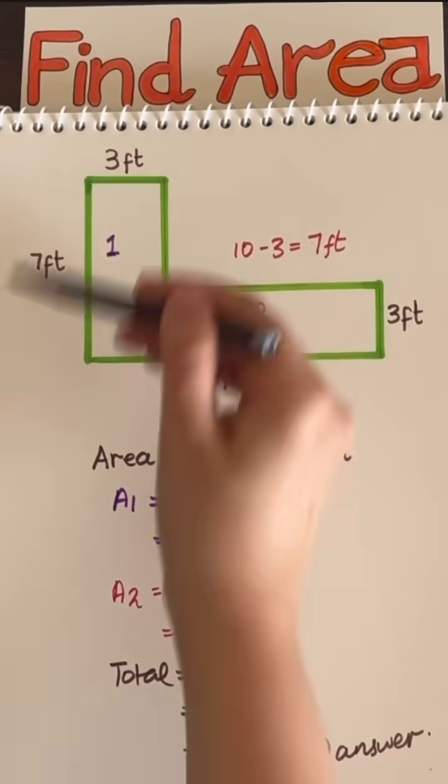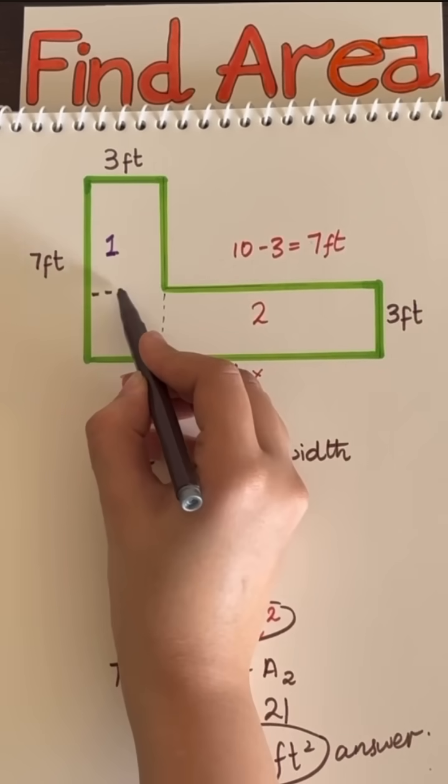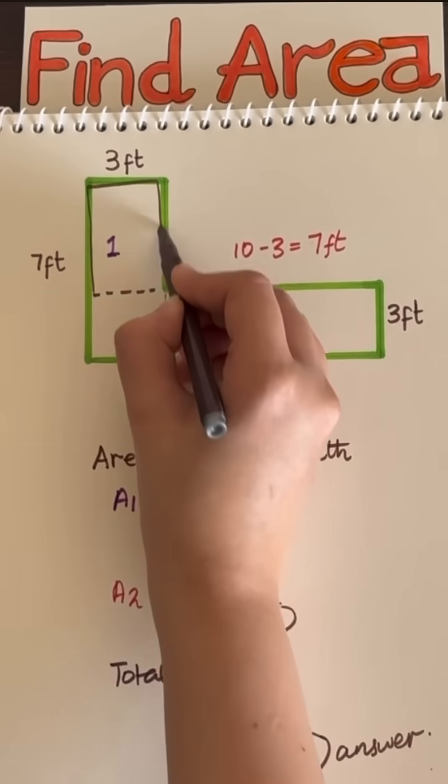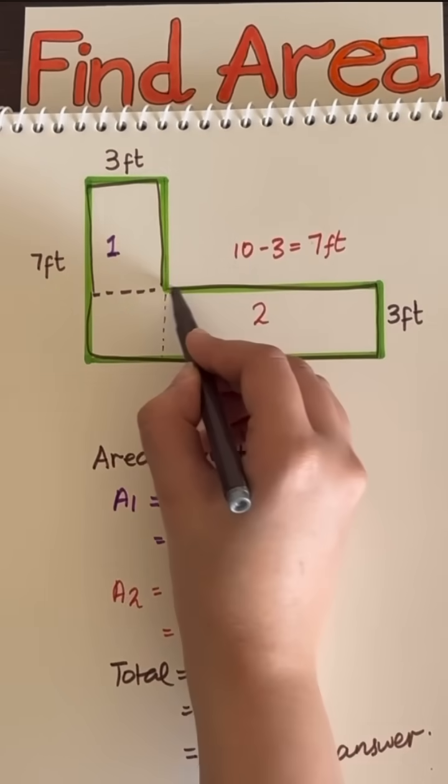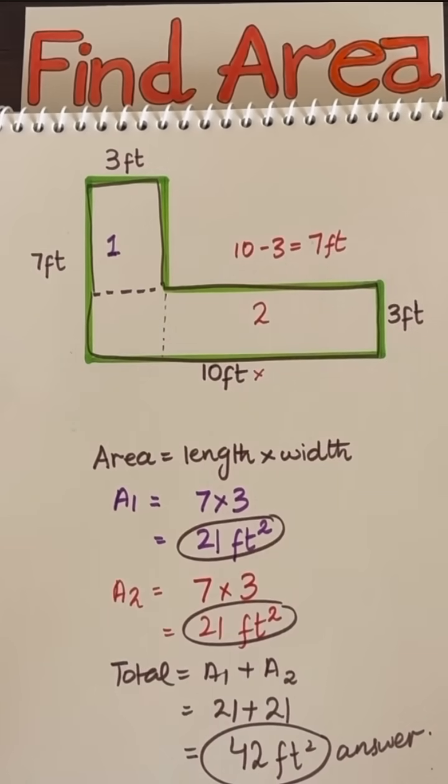If we rewind this back to the beginning, we could actually cut this composite figure over here and find the area of these two rectangles instead. So give this a try and see if you get the same answer.